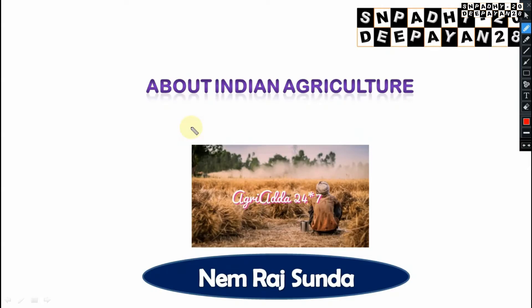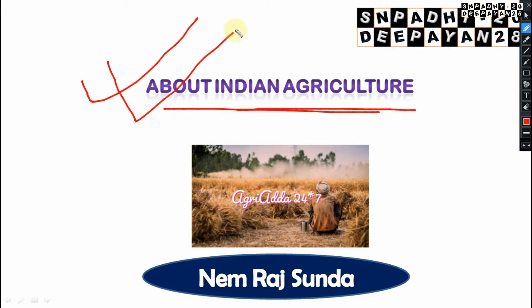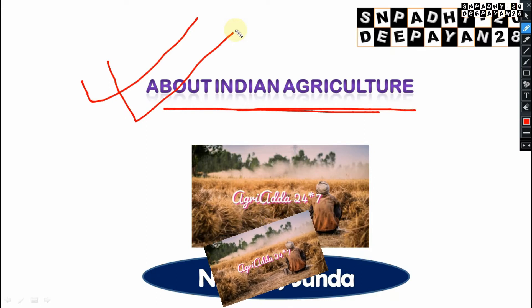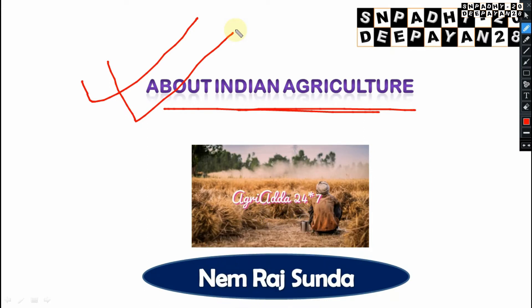Hello everyone. Today we are going to discuss some important facts of Indian agriculture — how much geographical area is there, how many forest lands, how many cultivated areas, what is the productivity and production, which state has which highest production in terms of maize, cereals, pulses, and what is the GDP contribution of agriculture. These things come in the exam very frequently, so we need to remember them.